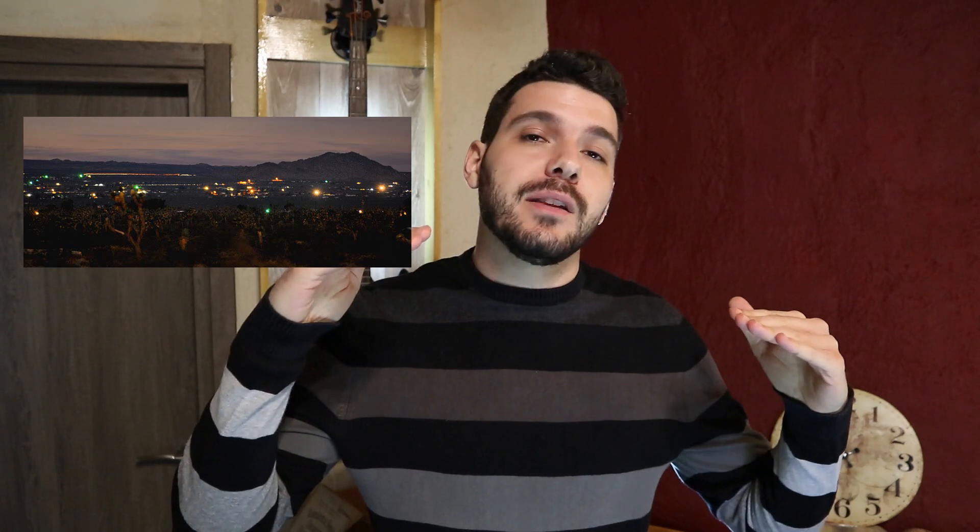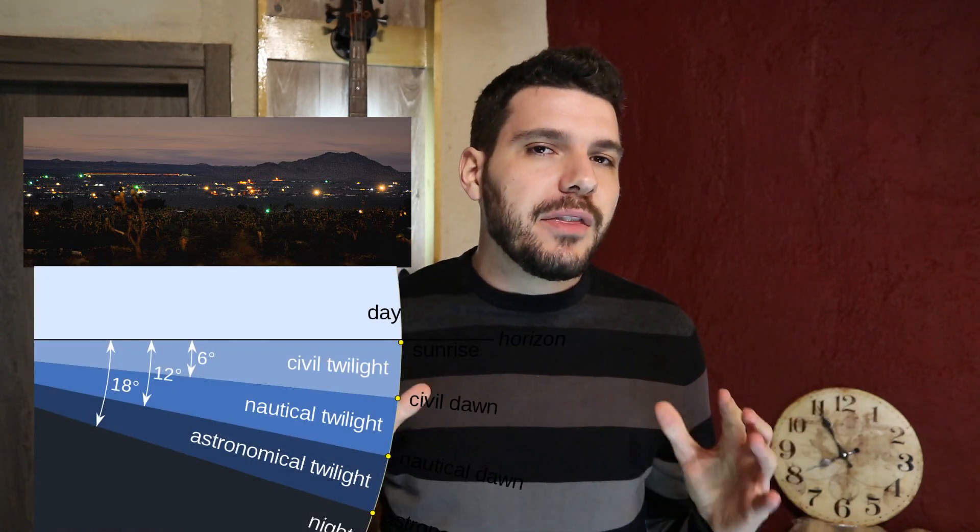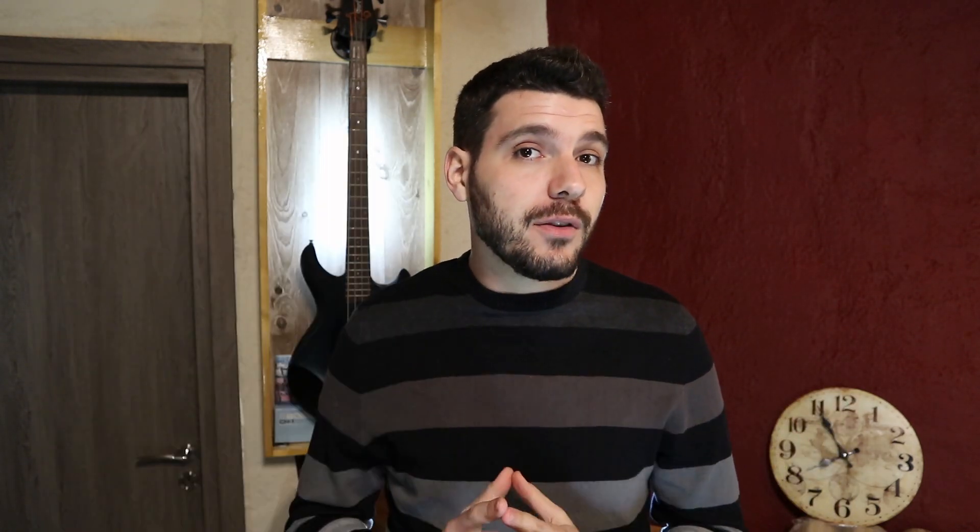Last is the astronomical twilight, when the sun is located from twelve to eighteen degrees below the horizon. Things are a lot darker from that point on, but the sky still has some blue shades. When the sun goes beyond eighteen degrees below the horizon, it is considered night. The order of these three twilight types is the opposite at dawn.